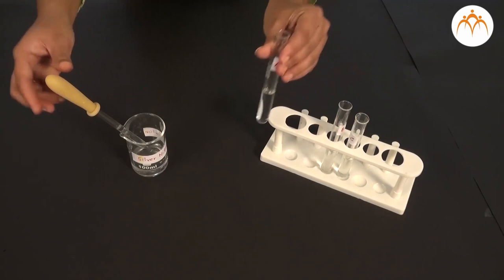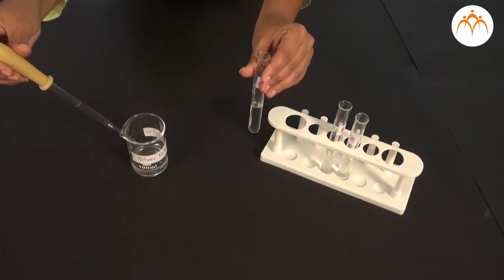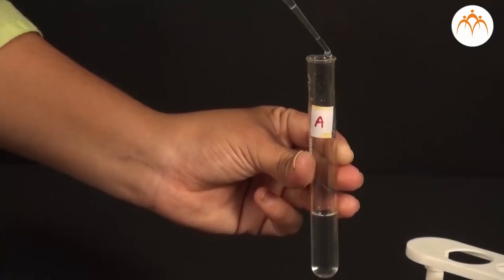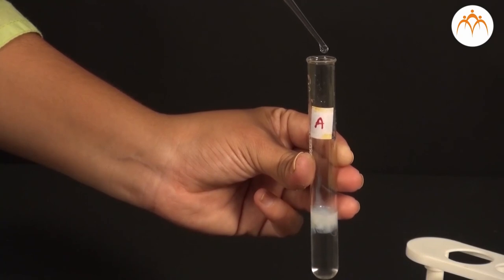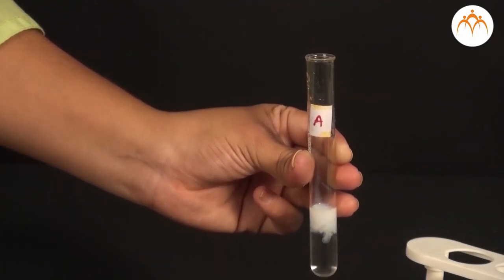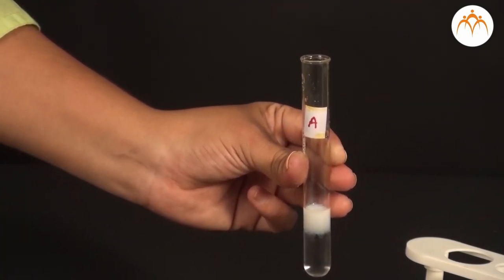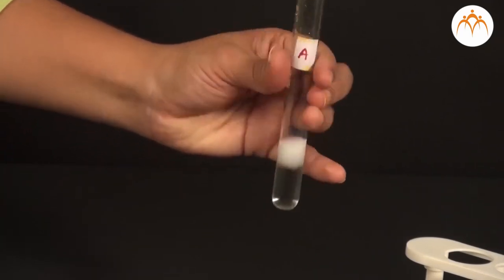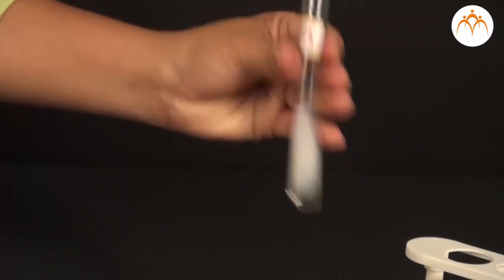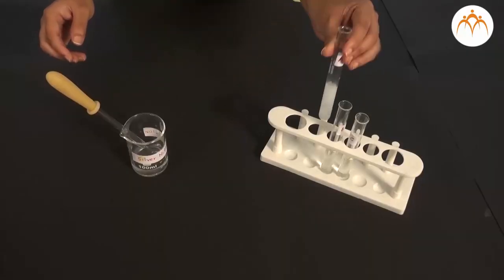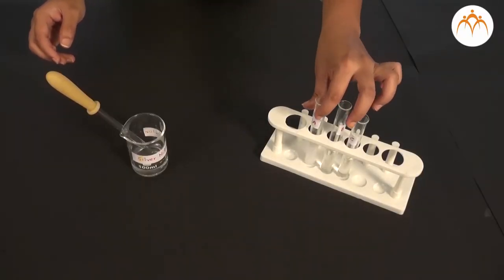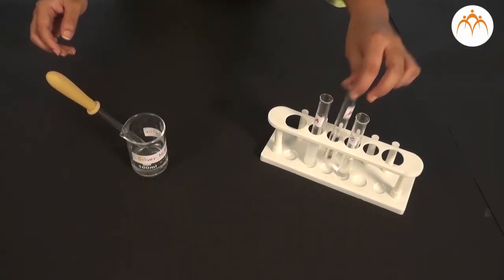Note down the observations in the table. As soon as you add silver nitrate, we find that chemical reaction starts and some product is developed. This product is not a liquid but it is solid. Such solid product that comes out of the solution is known as precipitate and the process is called precipitation.